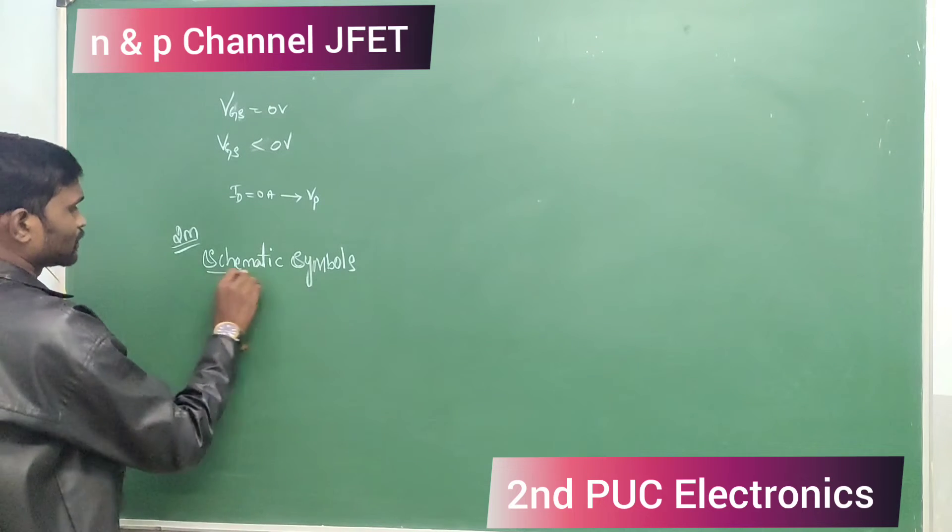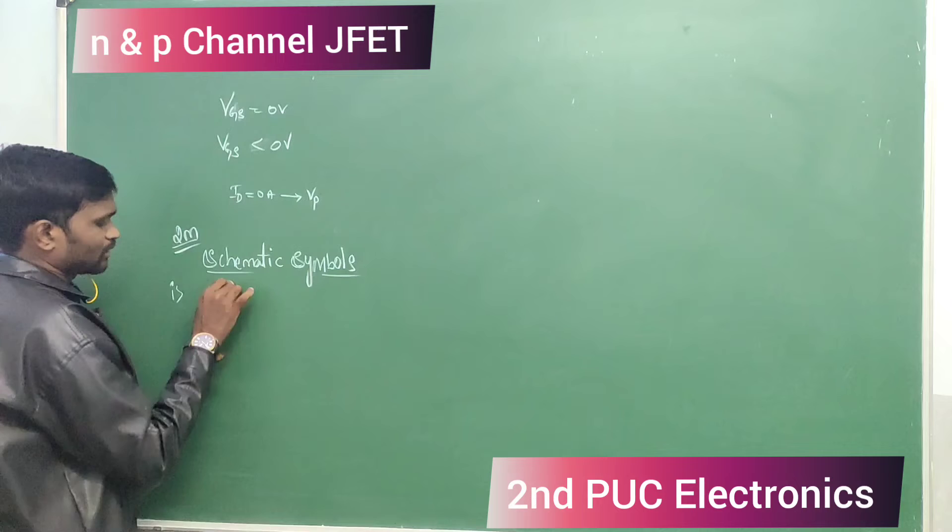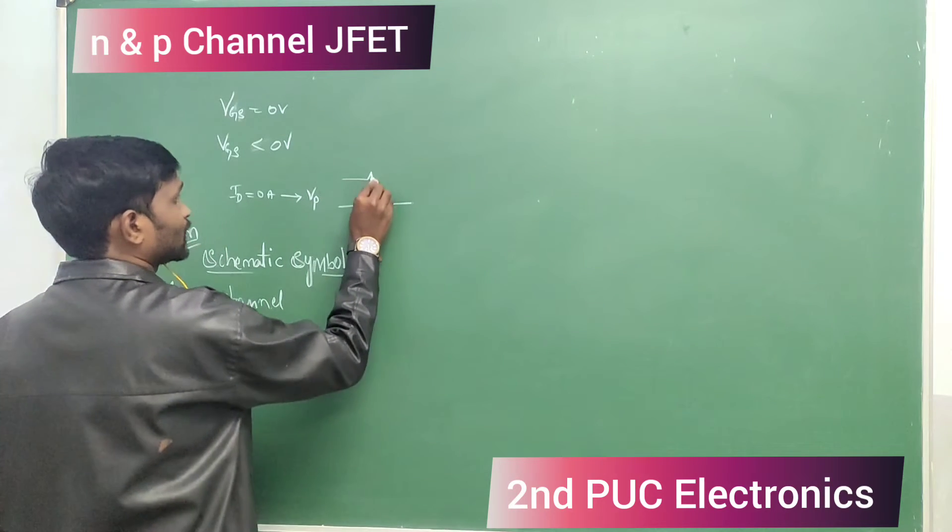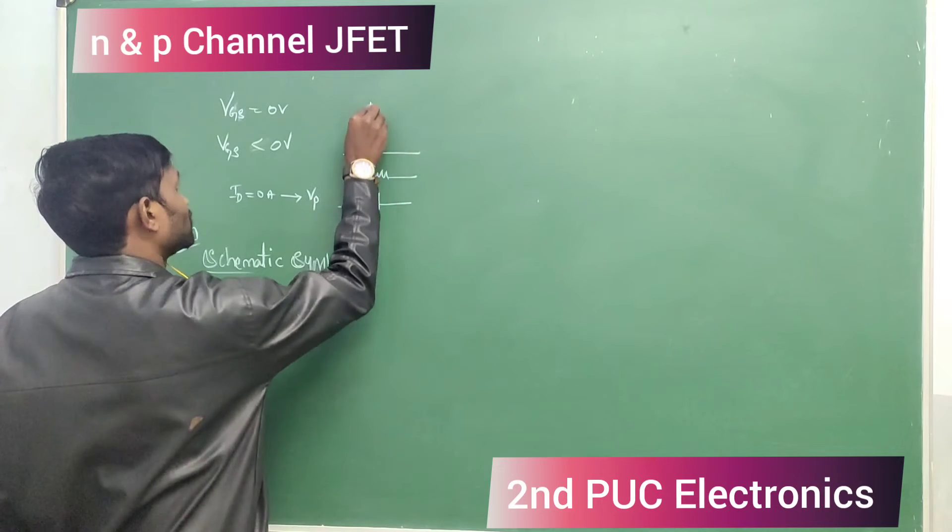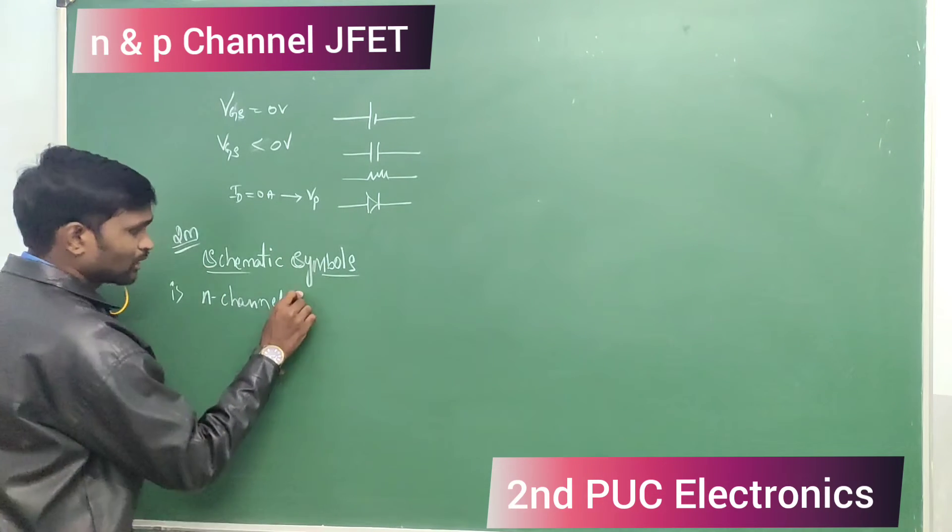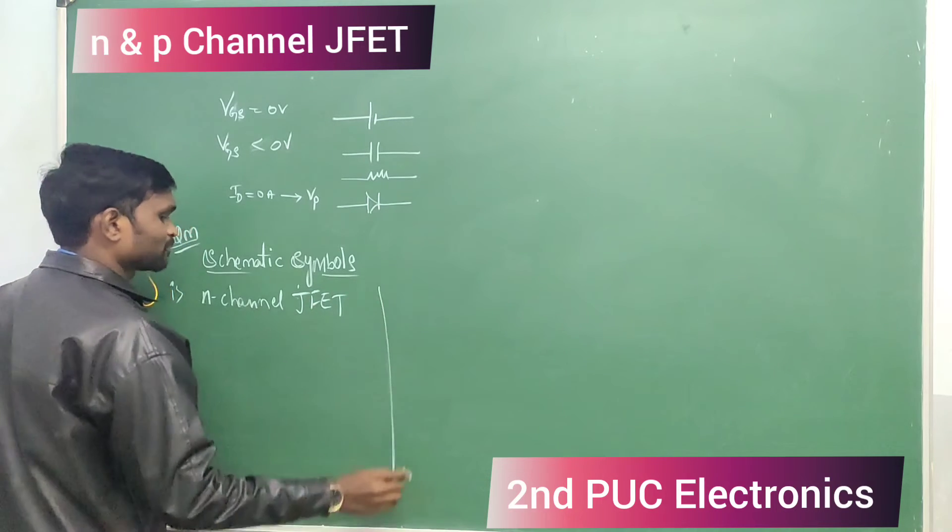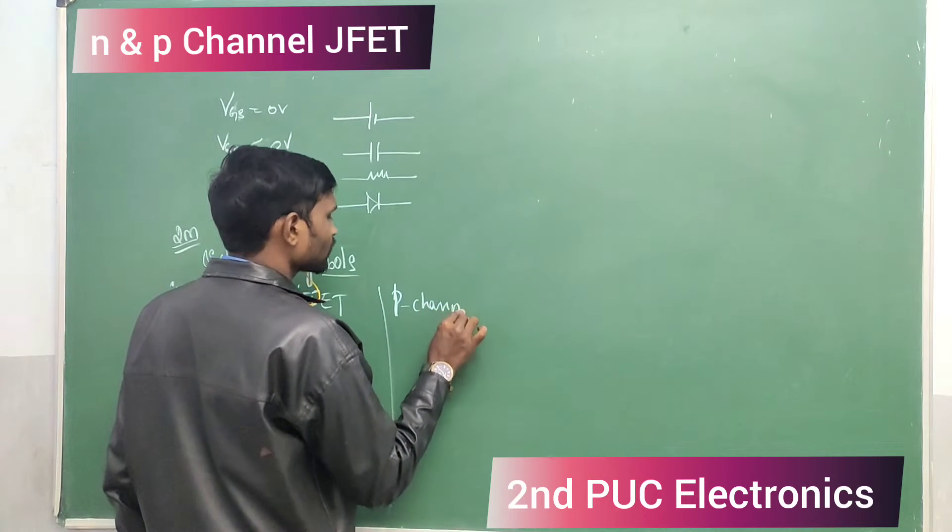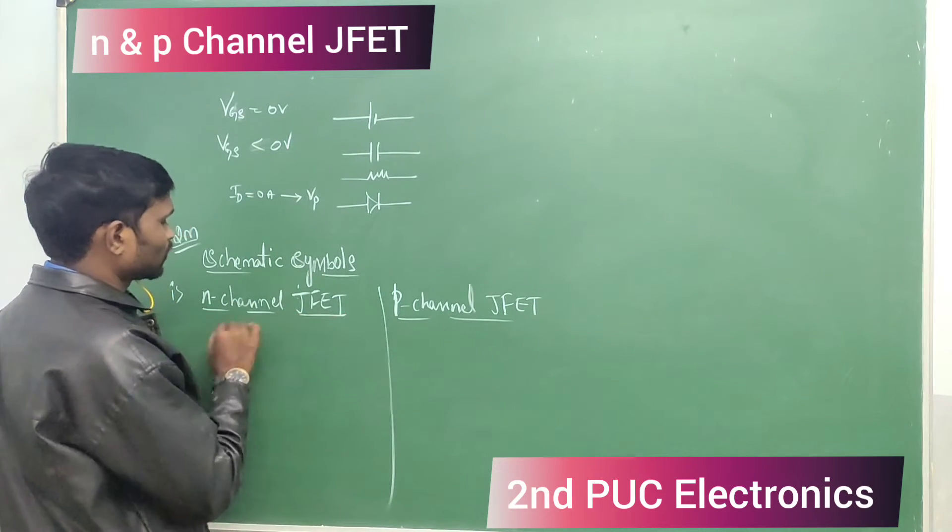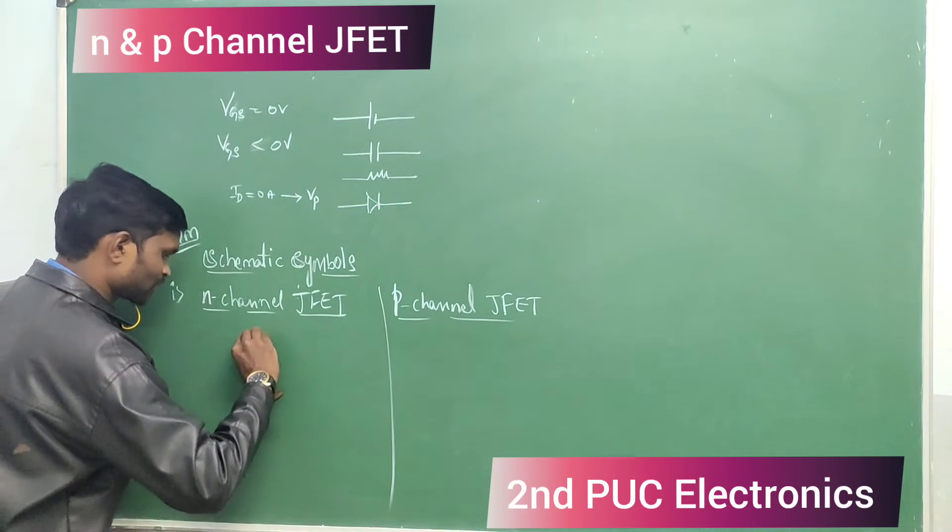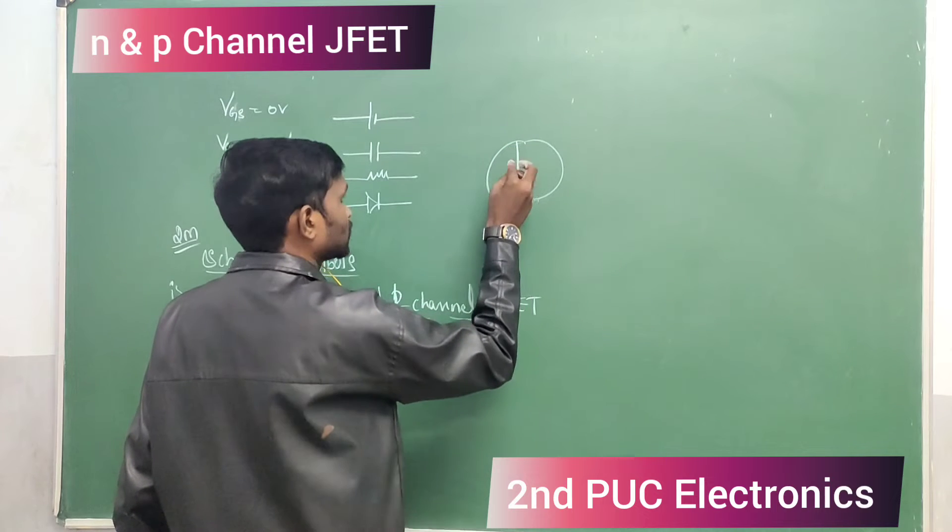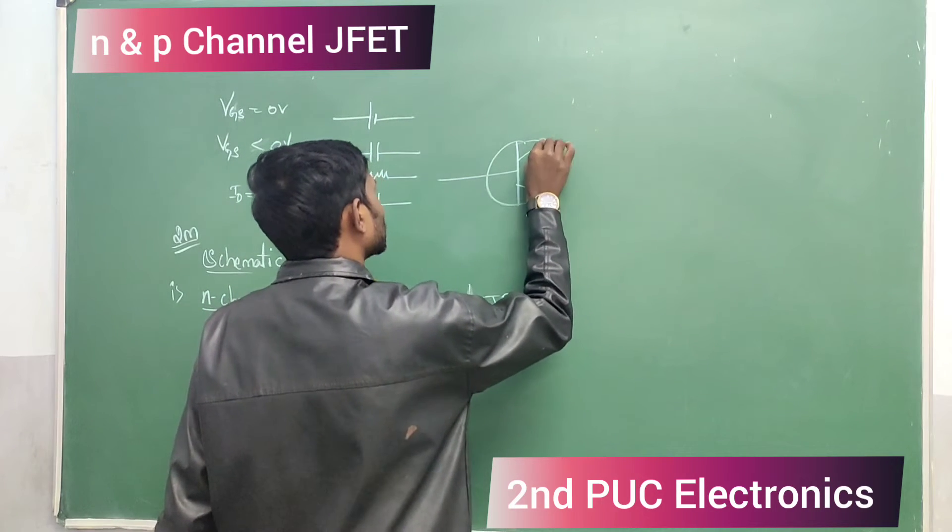Schematic symbols: N-channel JFET - we can have the transistor, one represents resistor, another represents capacitor, another represents battery, and here represents FET. N-channel JFET you have to represent, P-channel JFET you have to represent. Sometimes they ask two marks question: draw the schematic symbol of N-channel JFET.